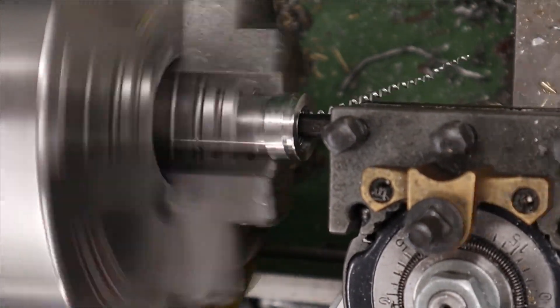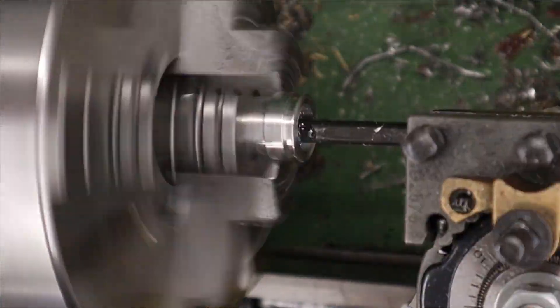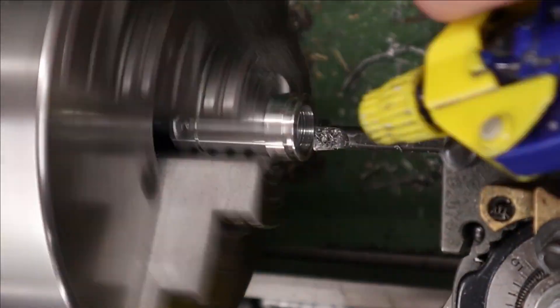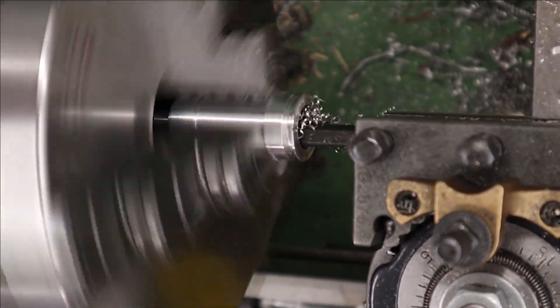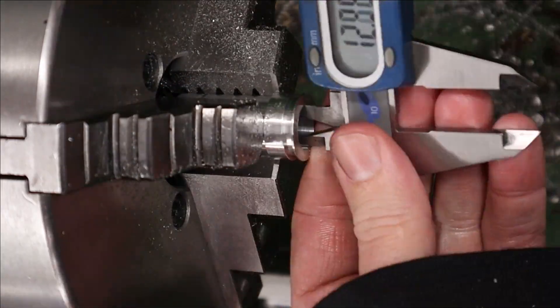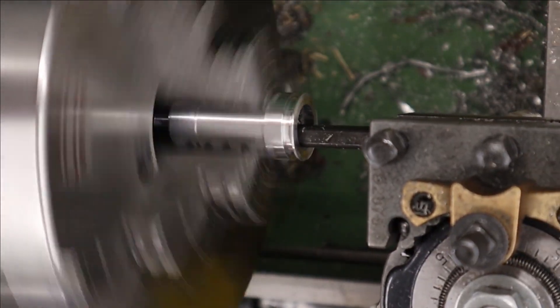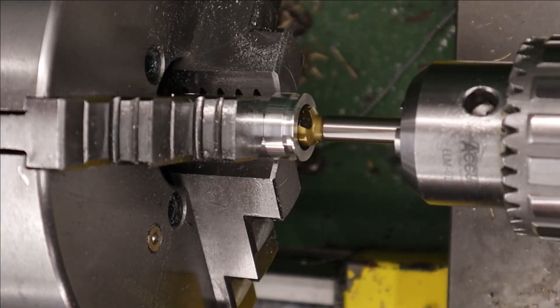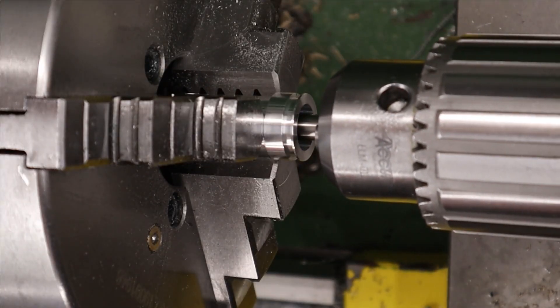With that done we can bore out the plenum area using a nice small boring bar and we need to get this to 14 mil ID. Before we finish out the valve seat to depth we take a countersink and create a small chamfer on the inside of the valve edge and this will just reduce the area the valve has to seal against.